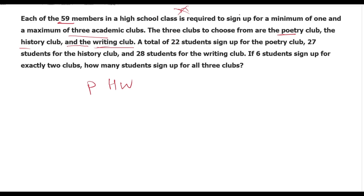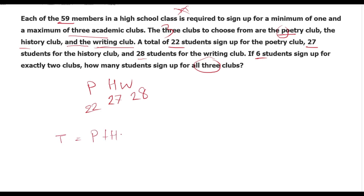Just basic answers to all. Three clubs — P, H, W. A total of 22 for one of them. Six students signed up for exactly two clubs. Exactly two is 6. How many students signed up for all three clubs? Can we use the formula?